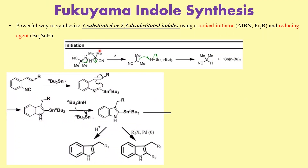This is one of the most important and powerful methods for the synthesis of three-substituted or 2,3-disubstituted indoles. What we need is basically a radical initiator, which is usually AIBN or triethylborane. And what we need as a reducing agent is tributyltin hydride.